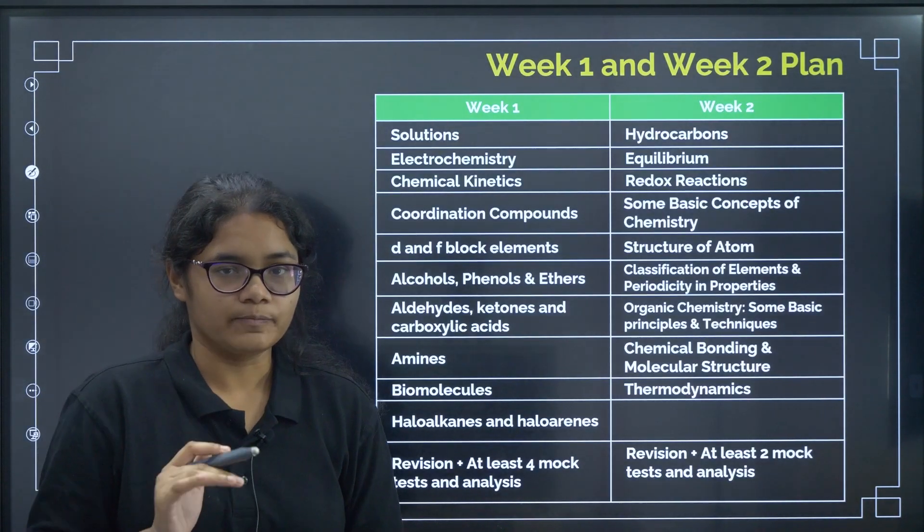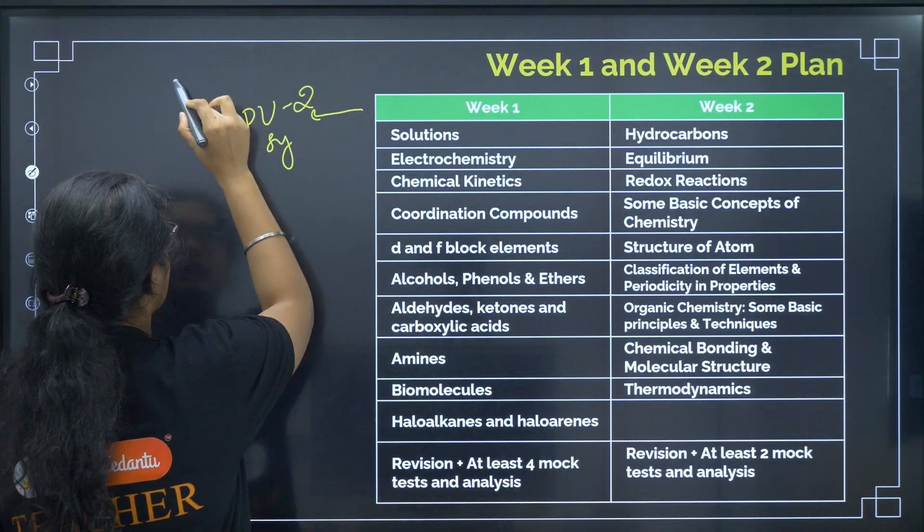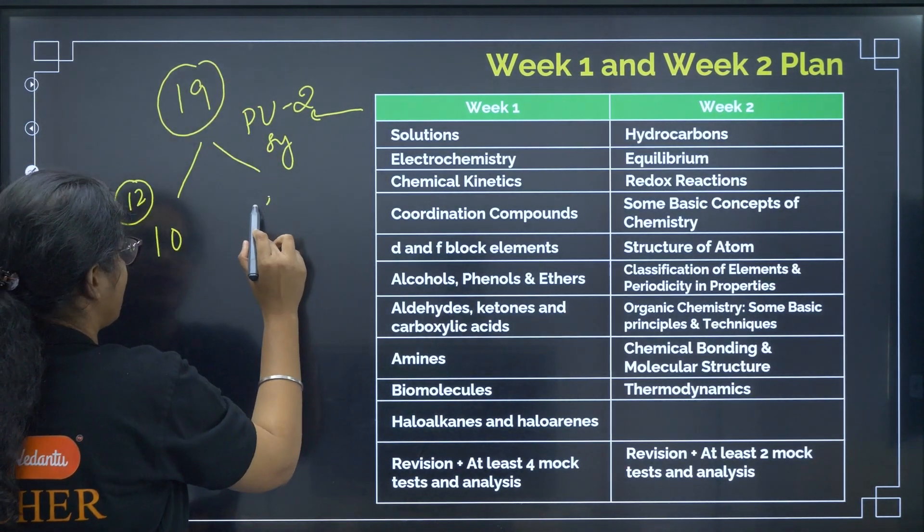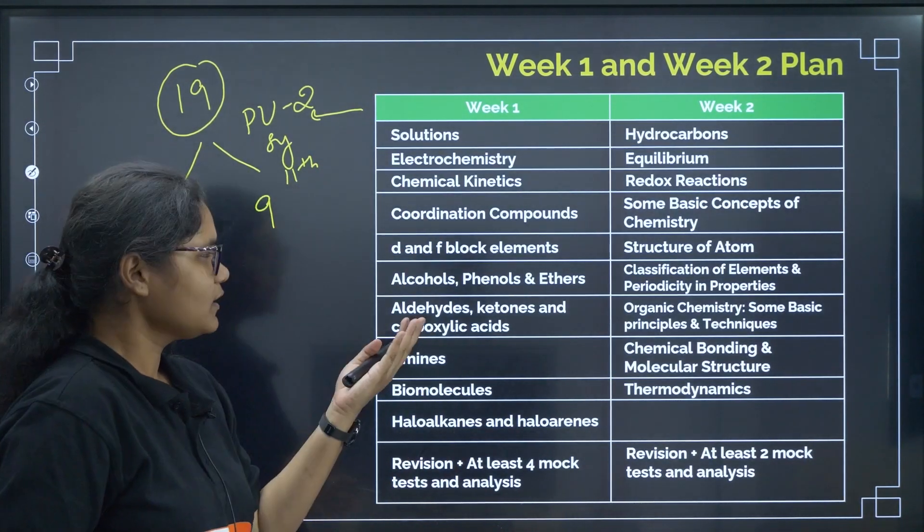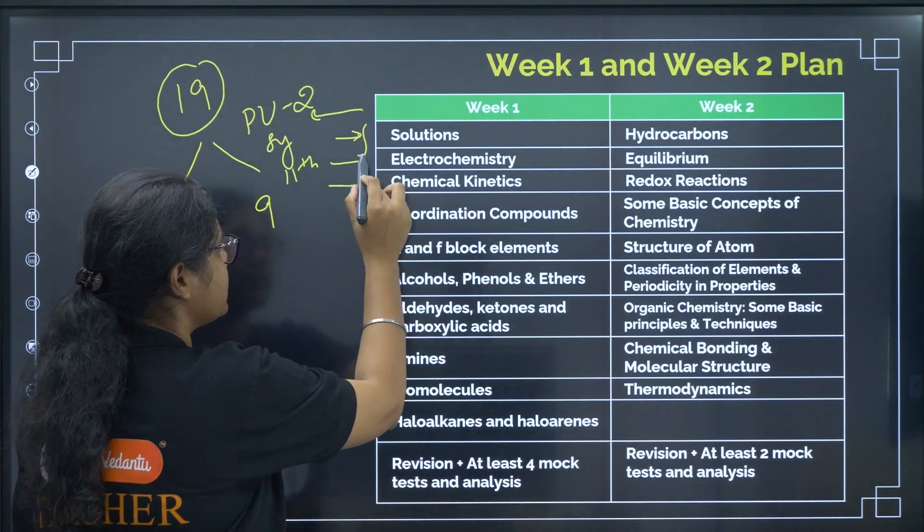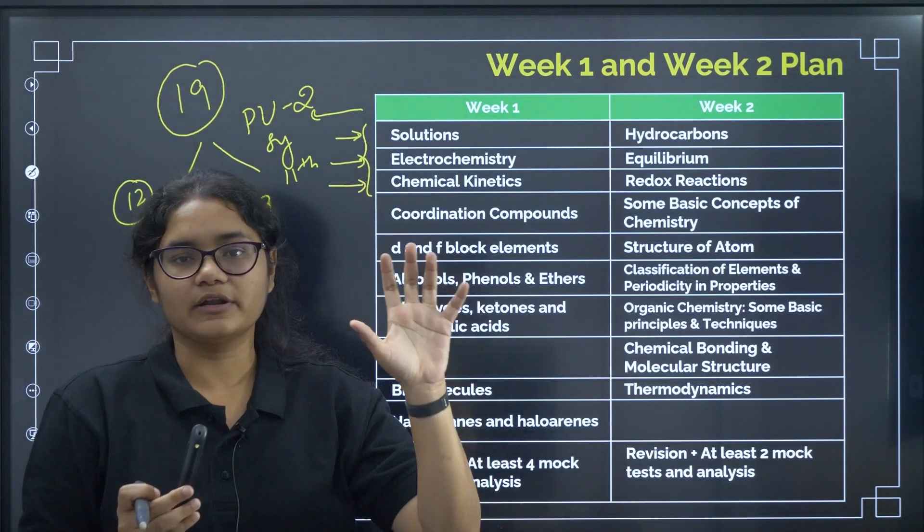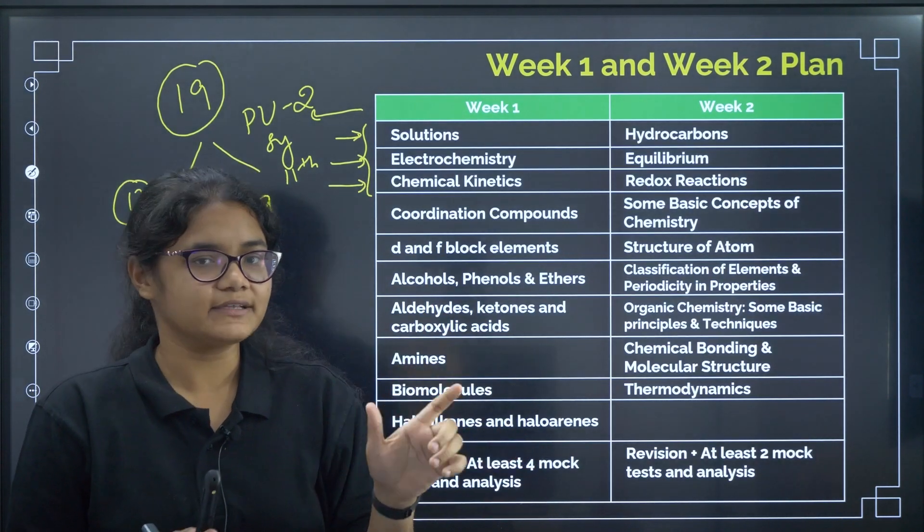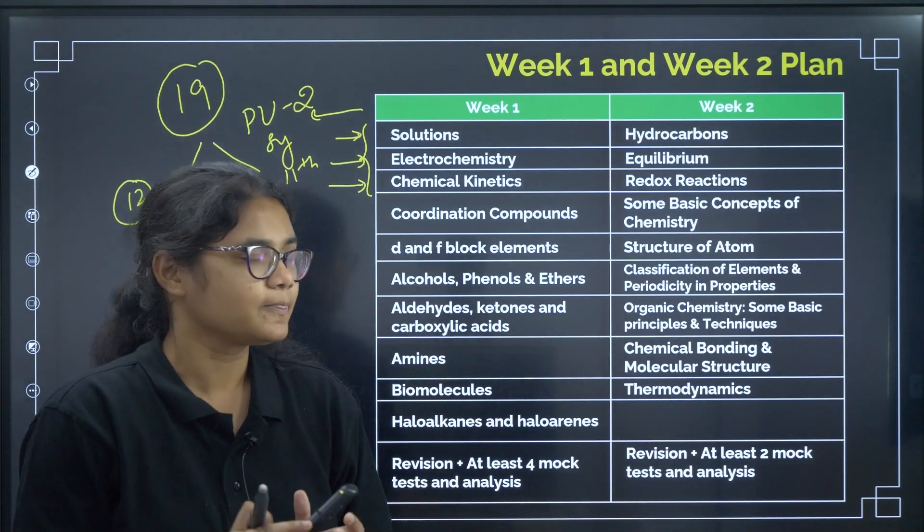Now, coming to week 1 and week 2. In week 1, we will be focusing on PU 2 syllabus. There are total 19 chapters in chemistry, in that 10 are from your 12th standard and we have first 9 chapters from your 11th standard. I have given you the list of these 10 chapters. So, you have to prepare solutions, electrochemistry, chemical kinetics, these three comes under your physical chemistry. We have a video where we are discussing the important formulas for each chapter. You can watch that or if you have already have any short notes, just revise them, revise all the formulas, revise all the values, any definitions, any derivations we have, just revise them.